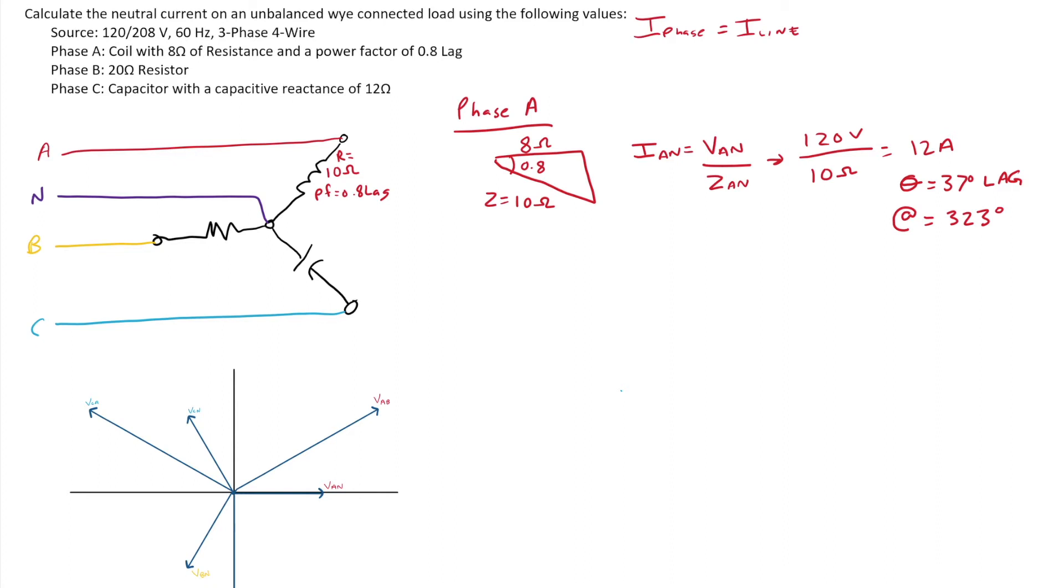So we'll do that when we get to the end when we do our phaser diagram. Actually, I'll put it in right now. 12 amps at 323 degrees. So that would be somewhere down here on my phaser diagram, that's IA.